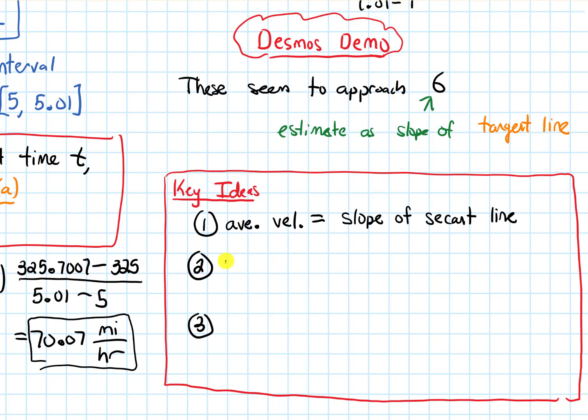And with that in mind, when we talked about the instantaneous velocity, and we got that by using the average velocities on a smaller and smaller time interval, that's analogous to what we were doing with secant lines. We were doing secant lines on a smaller and smaller interval to get the tangent line. So the instantaneous velocity is the slope of the tangent line.